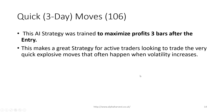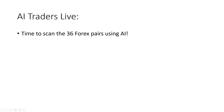The fourth strategy is quick three-day moves — ideal for currency trading, entering on day one and exiting on day three or four. This is active trading with very quick explosive moves that often happen when volatility increases. We look for explosive moves and elevated volatility. That covers how each AI strategy is found, and now we're going to scan the 36 forex pairs.